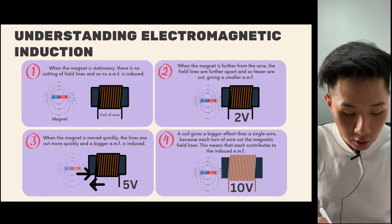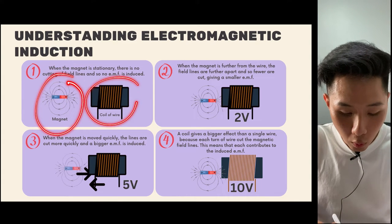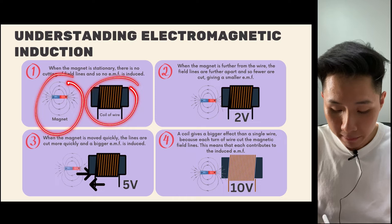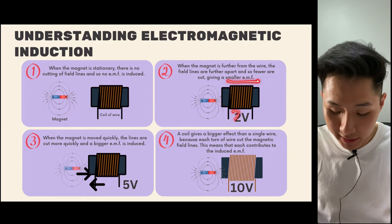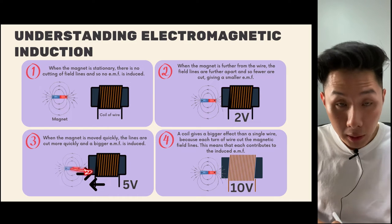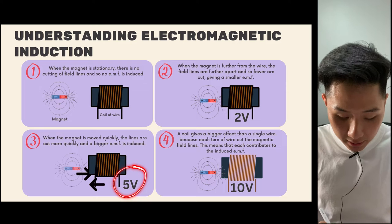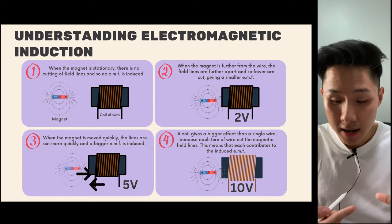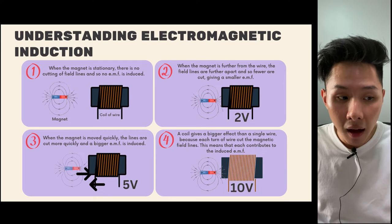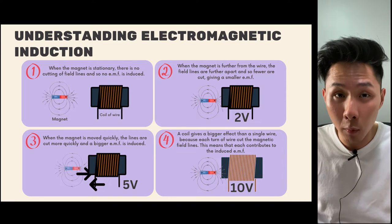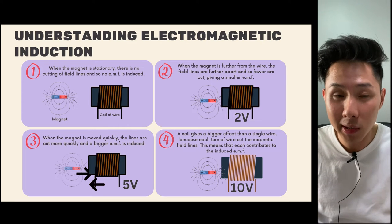If your magnet is stationary, no EMF is induced. When put close by a coil of wire, you'll get a smaller EMF — let's say 2 volts. But if you move it very quickly in and out of the coil, you'll get a higher voltage. To induce a bigger EMF, you can use more coils of wire. Because how it works is that electrons in the wire will move — so if you have more wire, more electrons are flowing, which creates more current.